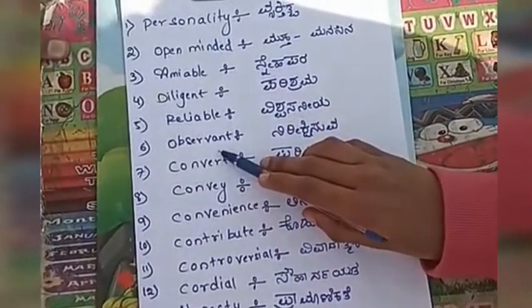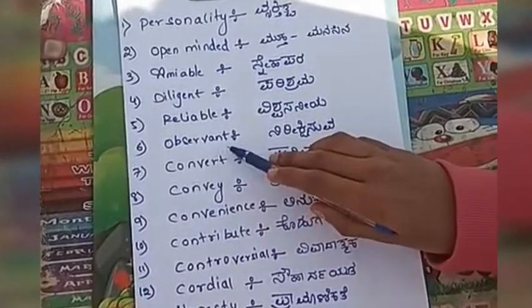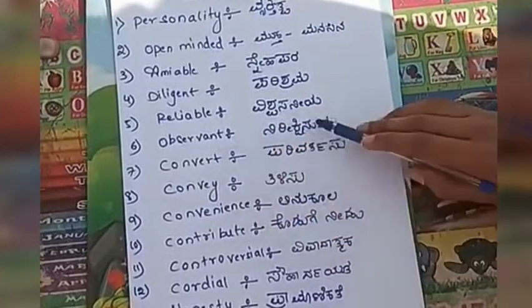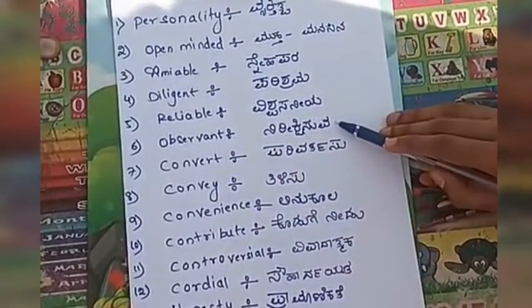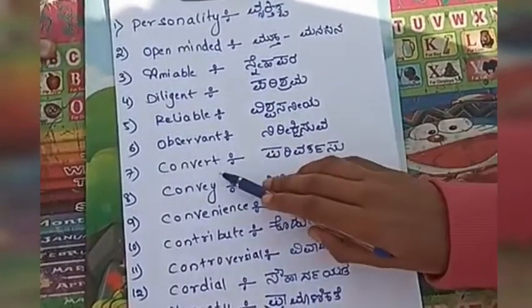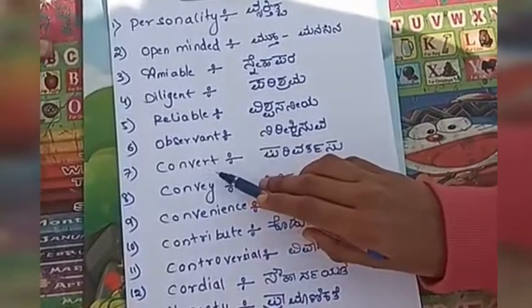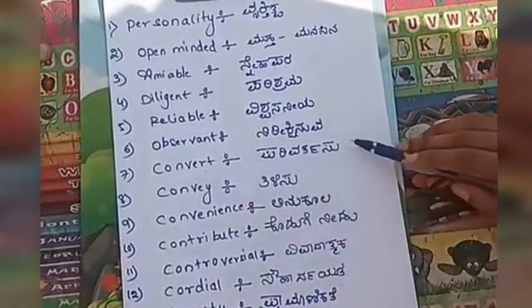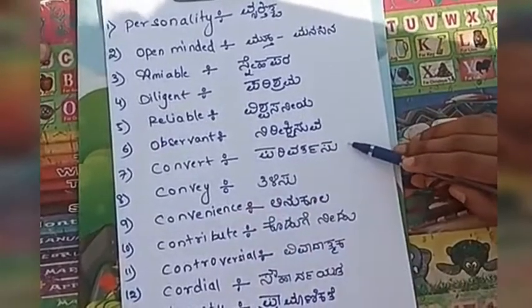Observant — nirikshiswa. Convert, C-O-N-V-E-R-T, convert — parivertiswa.